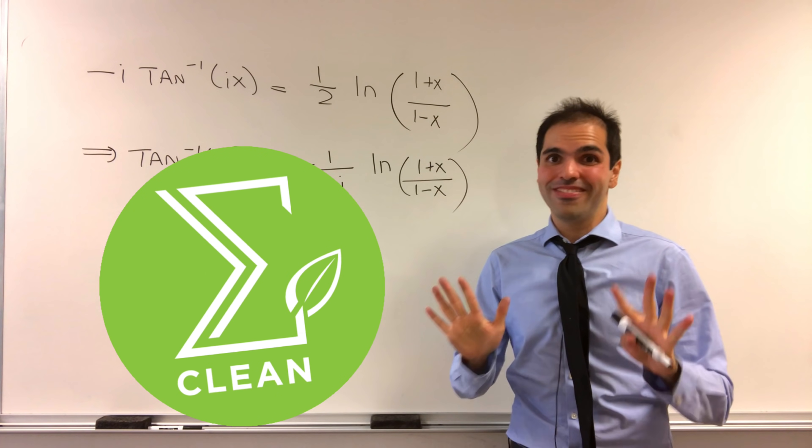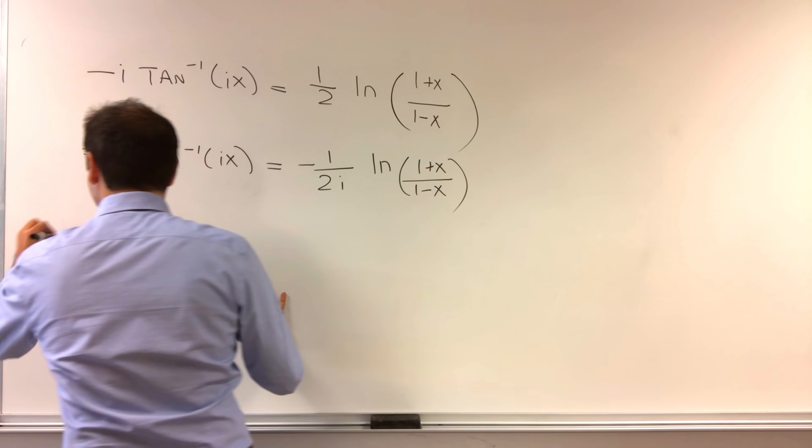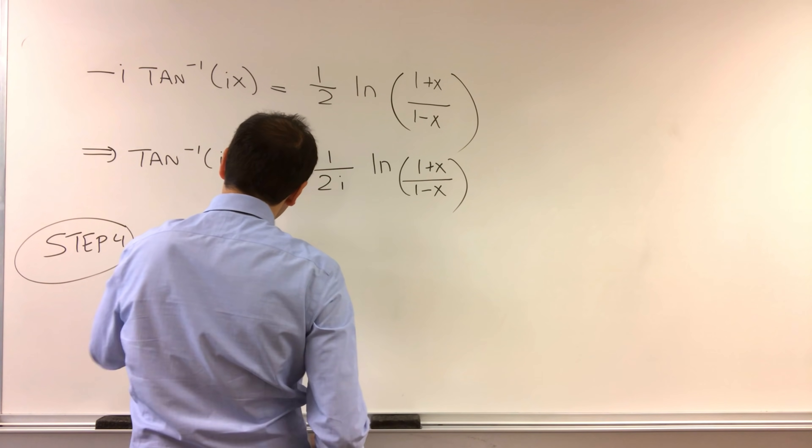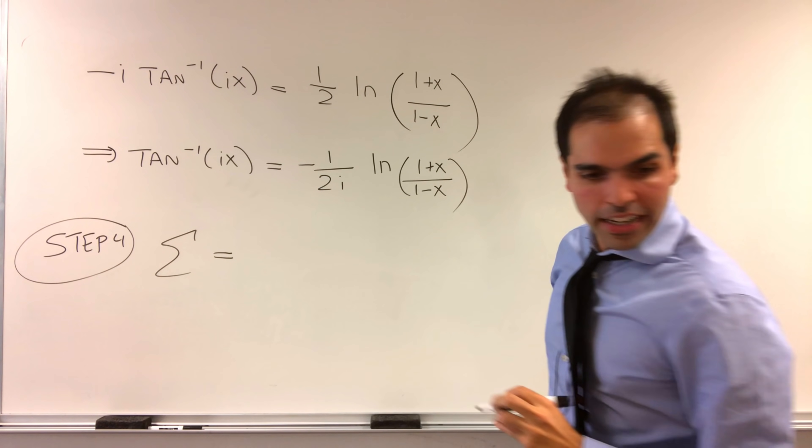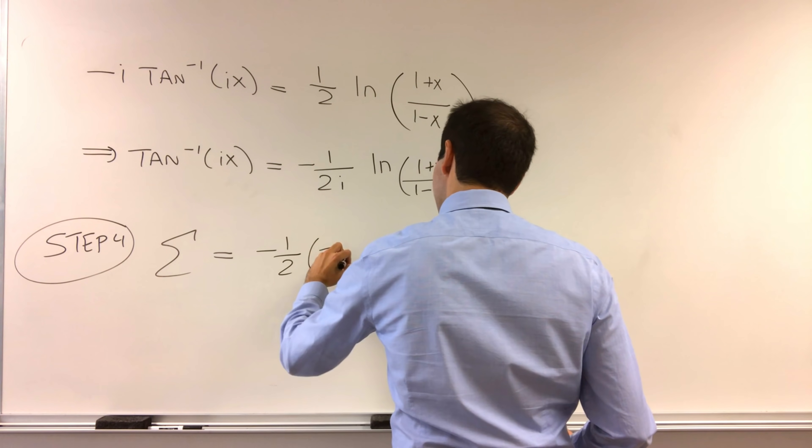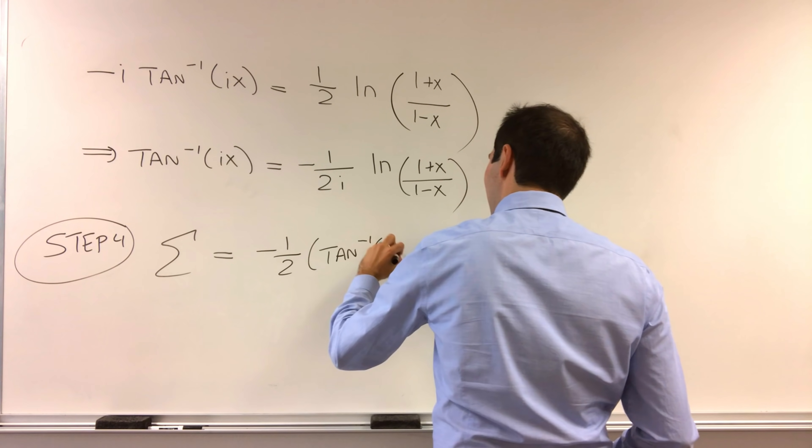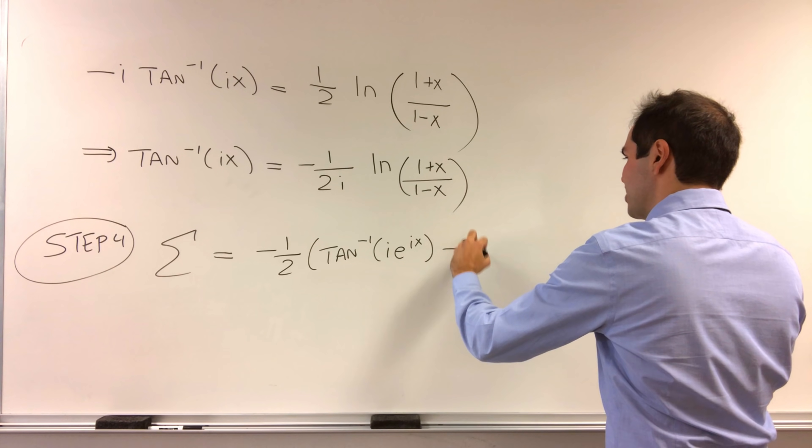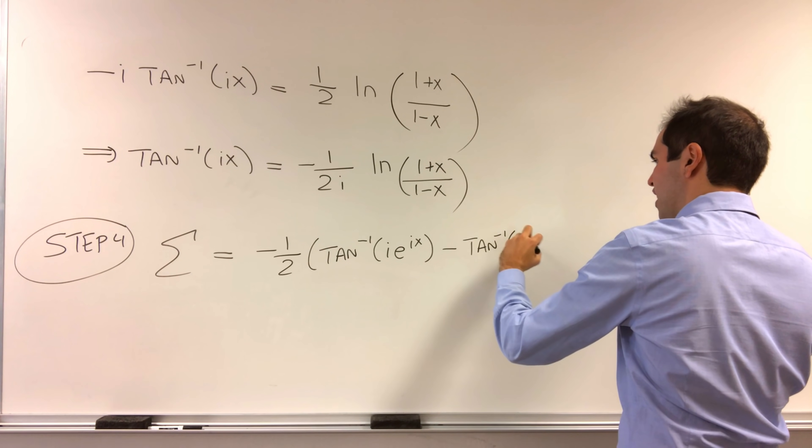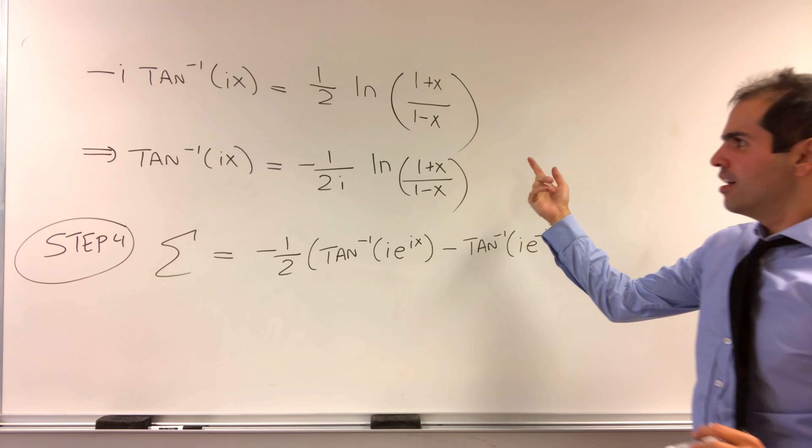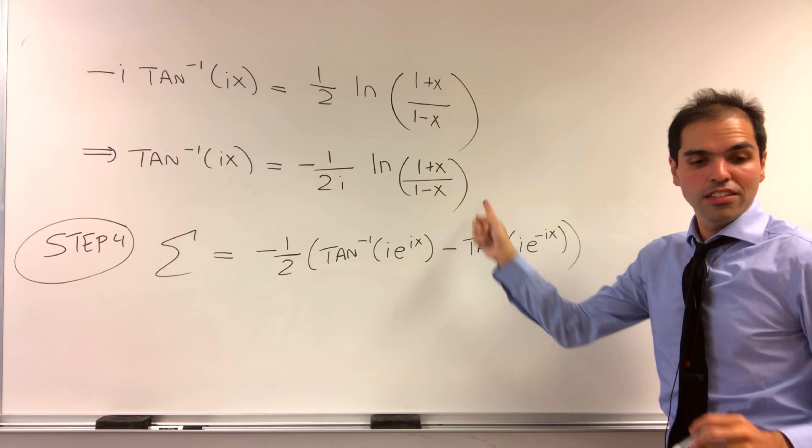And now, to sum up, no pun intended. What is our sum? Well, step 4, our sum that was just minus 1 half, so arctangent of i e to the ix minus arctangent of i e to the minus ix, but now we can simply plug in this formula.